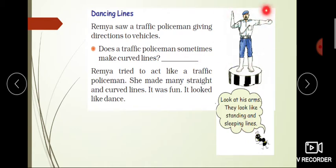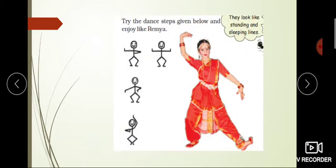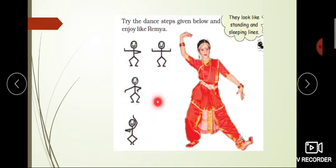So tell us, children - does the traffic policeman also make curved lines? Yes, he sometimes makes curved lines with his hands. Remia tried to act like a traffic policeman. She made many straight and curved lines - it was fun, it looked like a dance! Remia made different symbols using straight and curved lines, and if you look at these symbols carefully, they look like dance steps.